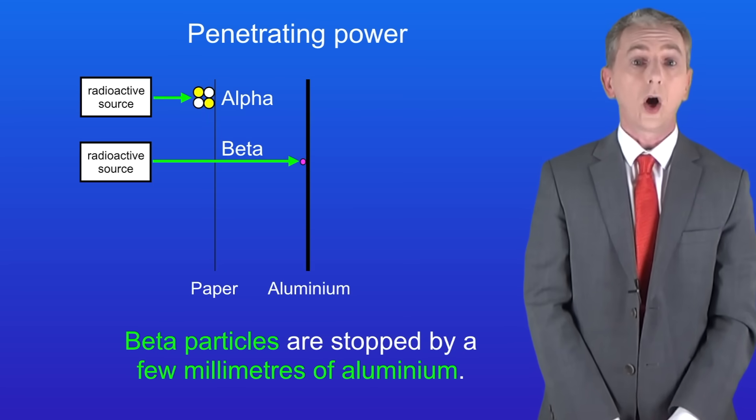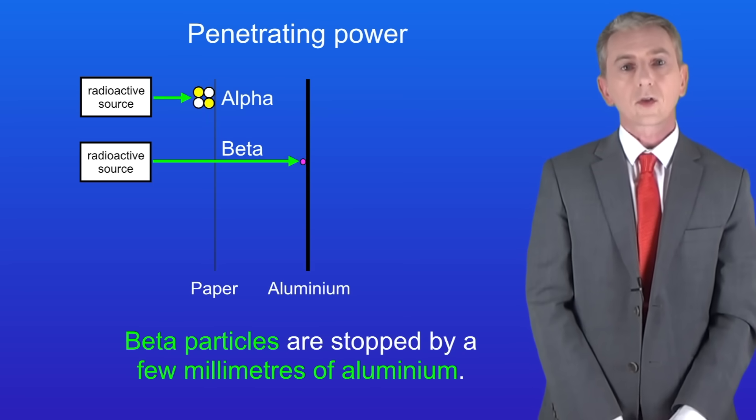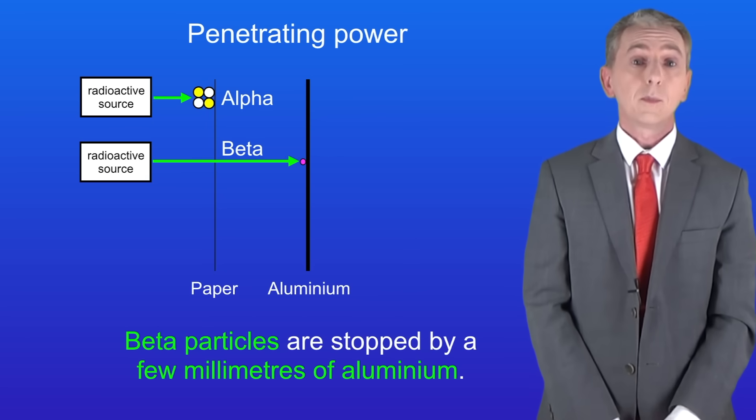Beta particles are harder to stop. In order to stop beta particles, we need a few millimeters of aluminium.